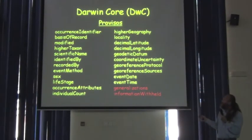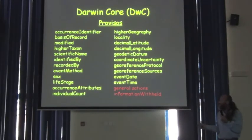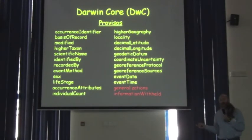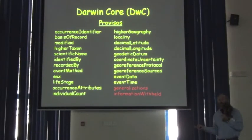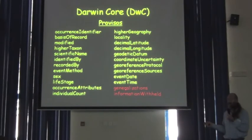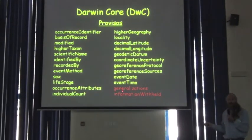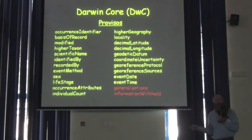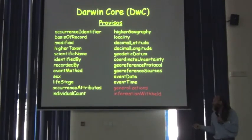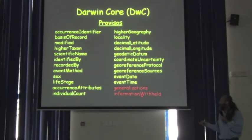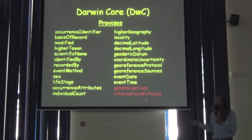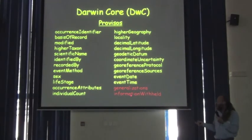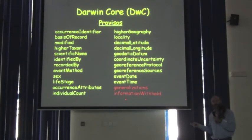Then one final group of information, which I call the survivors. These are information about what might have been done to the data that you ought to know about. Two of those — generalizations — tell you that the information as presented to you was changed from the original in some way, perhaps to protect the exact location of an endangered species. Or information withheld says there is more information available but it's not being shared publicly — that might be information about the collector whose identity is not to be shared. So these two tell you something about the process the data went through, and it helps you know whether or not you might want to contact the source institution to find out more.